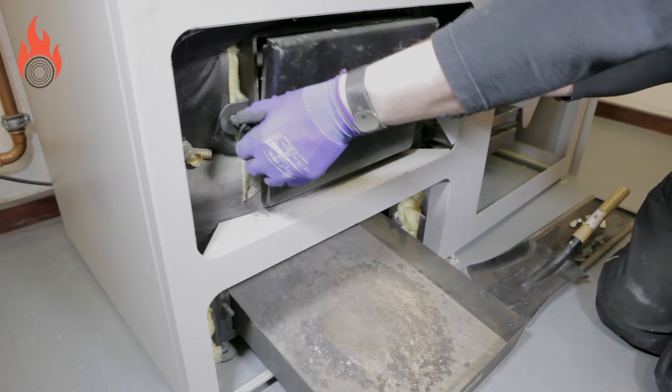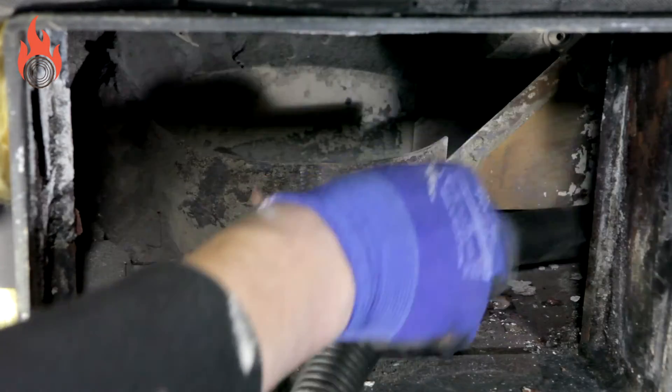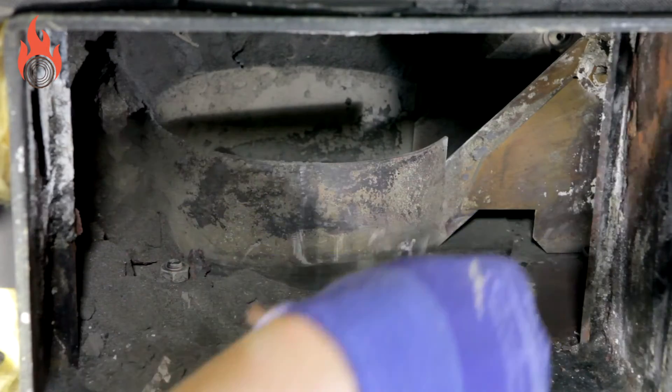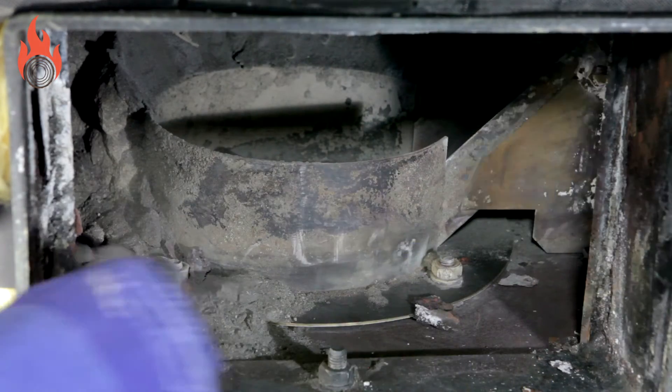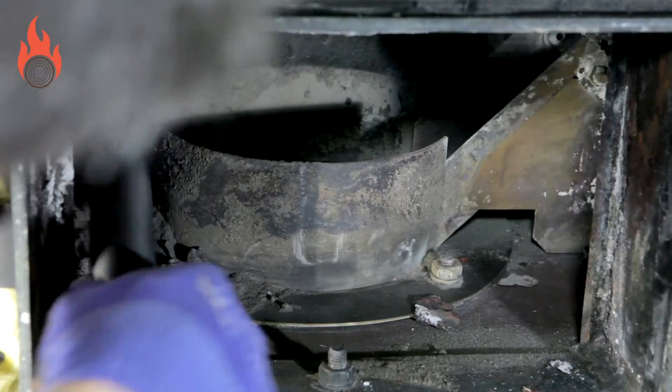Now open the upper cleaning door and keep the emptied ashtray under it. Remove the ash which remains around the burner using a vacuum cleaner. Also clean the area around the pellet chute. Check that the burner area is completely clean.